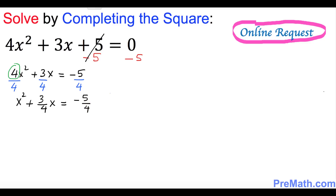The next thing I want you to look at the coefficient of x, which is 3 over 4. We are just interested in 3 over 4. I want you to put it somewhere here: 3 over 4. Now divide it by 2. Dividing by 2 is the same as multiplying by 1 over 2. So on the top 3 times 1 is 3, divided by 4 times 2 at the bottom is 8, giving us 3 over 8.